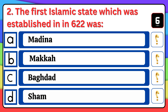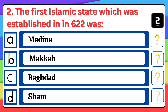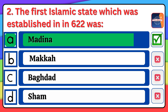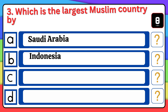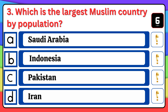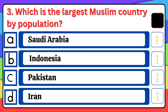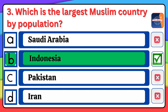How many Muslim countries are there in the world? The right answer is option C. The first Islamic state, which was established in 622, was — the correct answer is Medina.